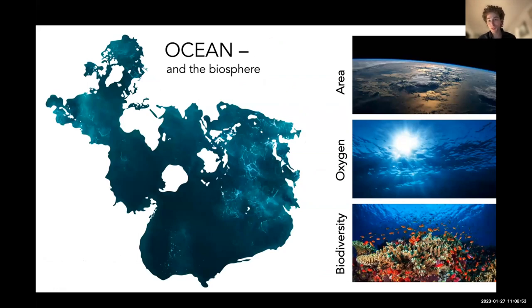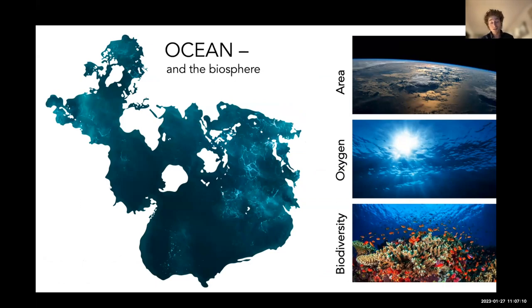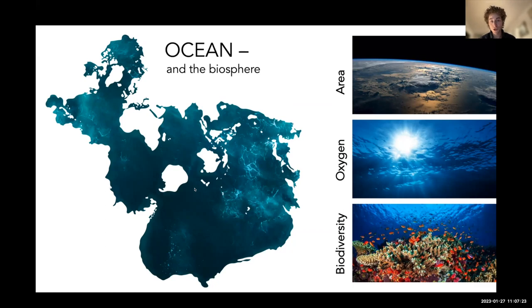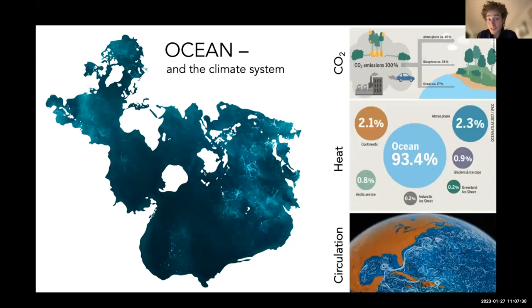The ocean covers two-thirds of the Earth's surface, provides oxygen, and harbors tremendous biodiversity. Life has existed in the ocean for some 3.7 billion years — three times as long as life on land. Out of 34 animal phyla, 33 are found in the ocean, only 12 on land. Up to 90 percent of marine species are still to be described.